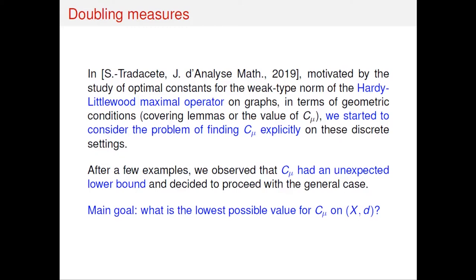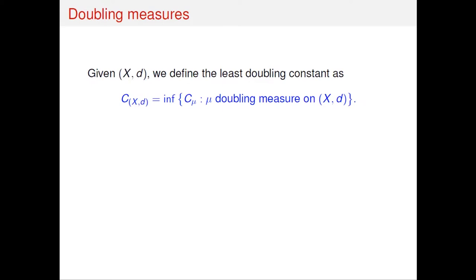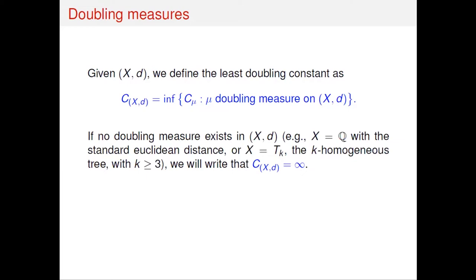The main goal was: what is the lowest possible value for the doubling constant on a metric space? We define a new constant — the infimum over all doubling constants for all doubling measures on the metric space. This constant now depends only on the metric space, not on the measure. Note that not all metric spaces support a doubling measure. For example, on Q with the Euclidean distance, or the homogeneous tree — a tree where all vertices have K neighbors — there is no doubling measure. In those cases the constant equals infinity.